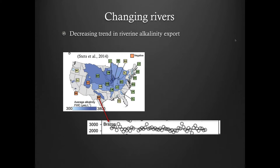Other than increasing alkalinity levels in rivers, there are other rivers that could experience a decrease in alkalinity export. This slide is from a paper summarizing many rivers in the country. For the Brazos River — the largest river in Texas — the finding was that the Brazos River has been having a decreasing alkalinity trend over the past few decades.